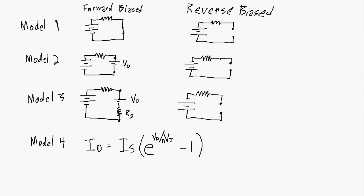In the forward bias configuration, the models do differ. In the first model, we just consider the diode as a short, so it acts as if it's just a piece of wire with no voltage drop and no resistance. To calculate things in the circuit, the full voltage is applied across the resistor, and we use Ohm's law to calculate the current.